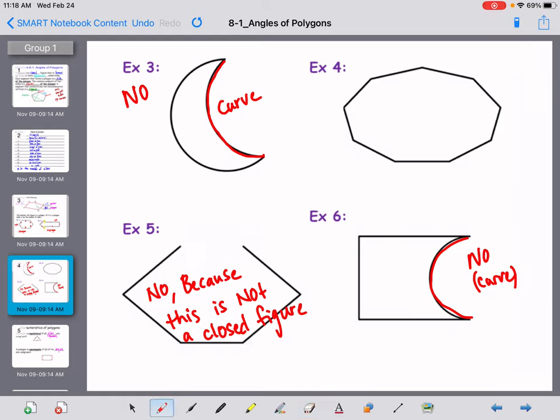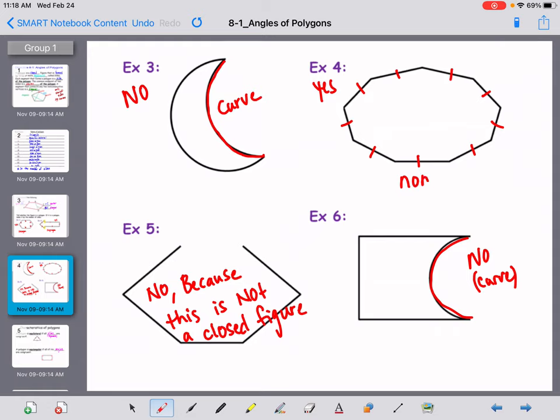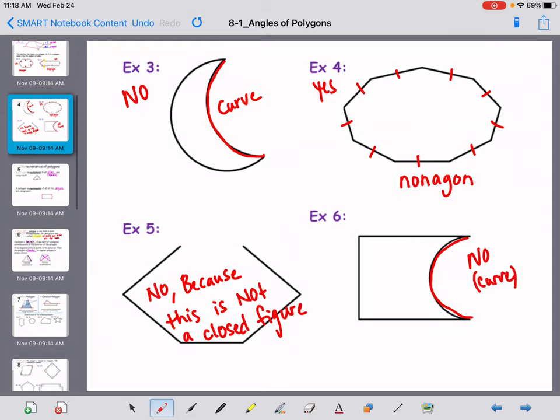And right here there's an opening so that one is a no for that reason. So example four would be a yes and let's count the sides: one, two, three, four, five, six, seven, eight, nine. It has nine sides. Nine sides is a nonagon. Alright, so there's just some practice on stating whether or not it's a polygon and then stating its name.